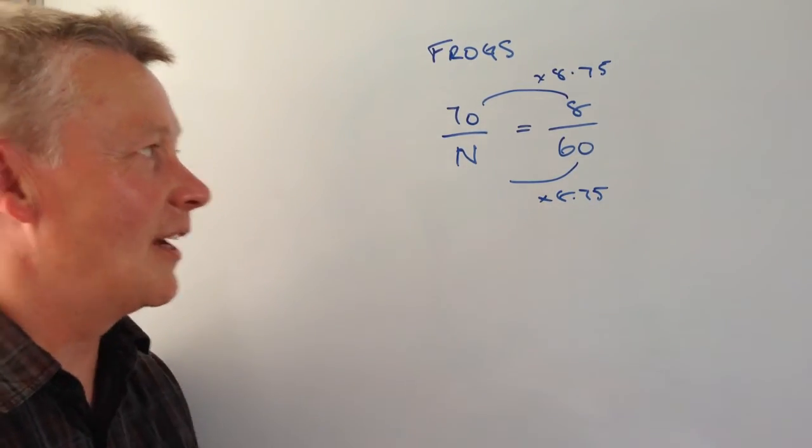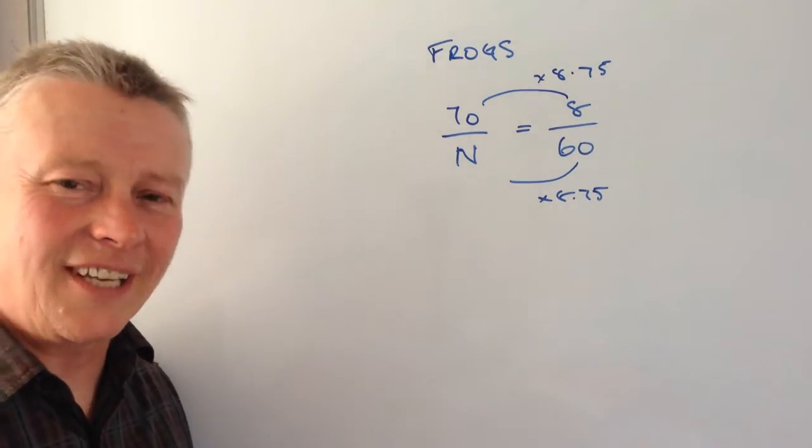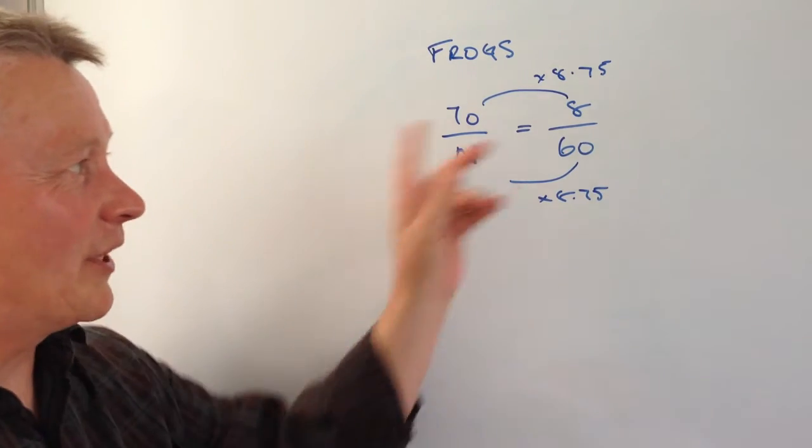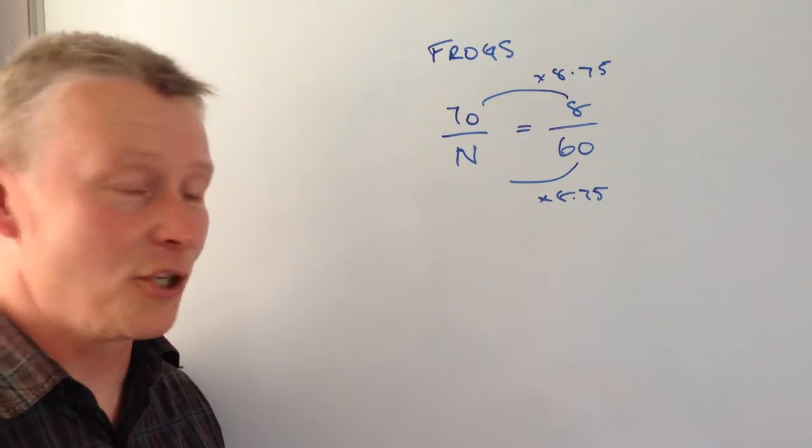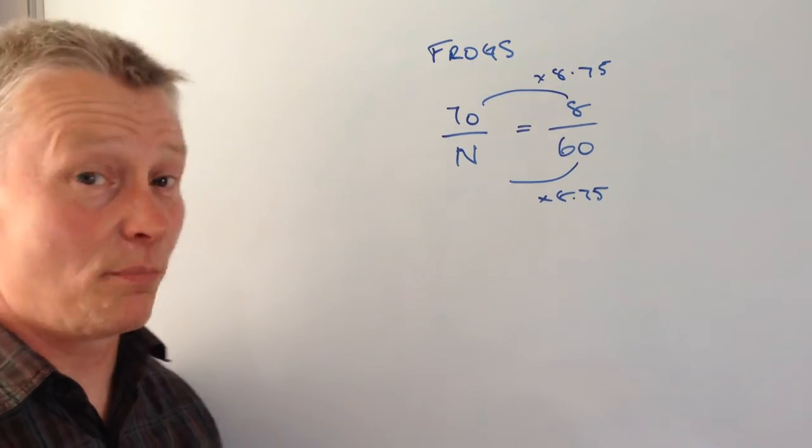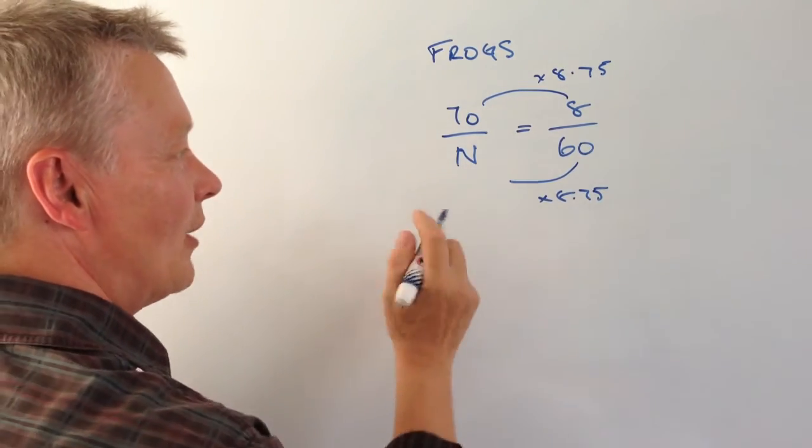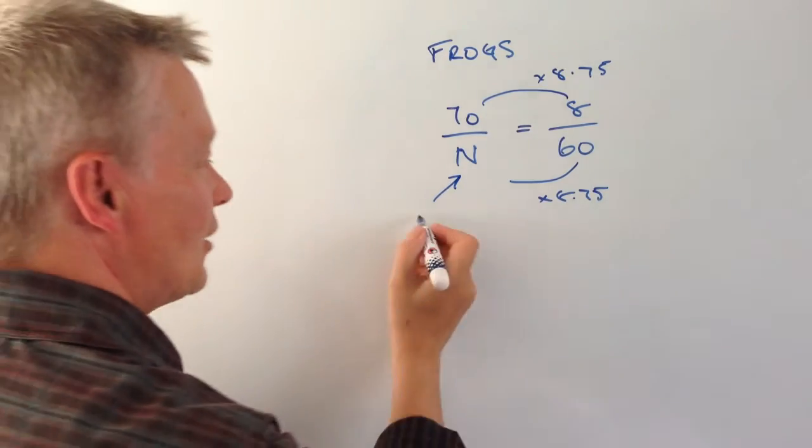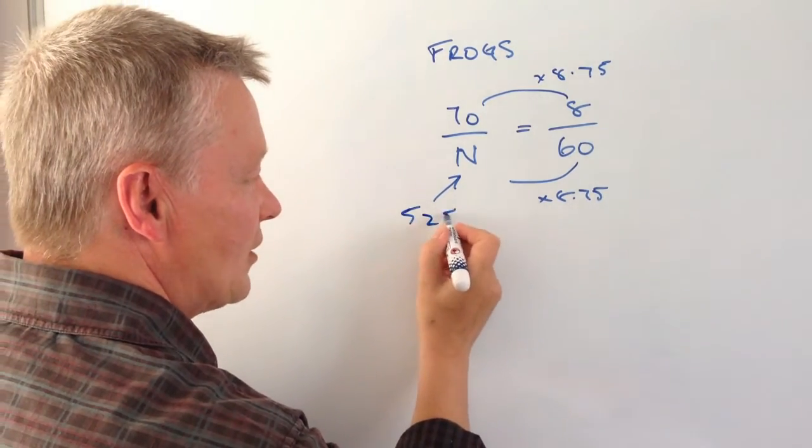Now it just seems a little bit counter-intuitive because you need a calculator for it. They're not easy numbers to manipulate just by normal calculations, but if you use a calculator you'll be able to work out this value of N is actually 525.